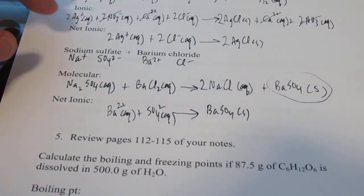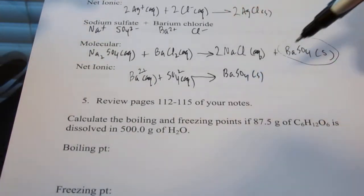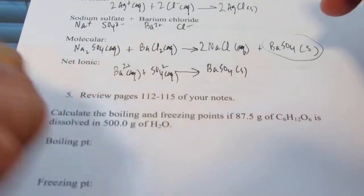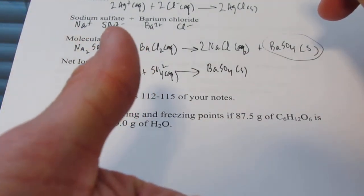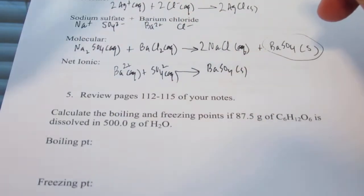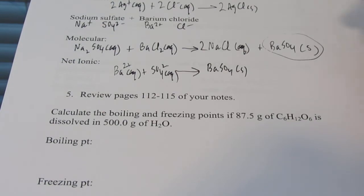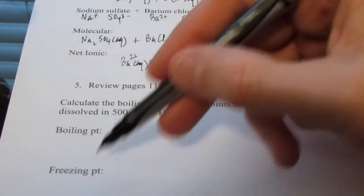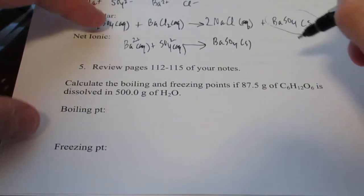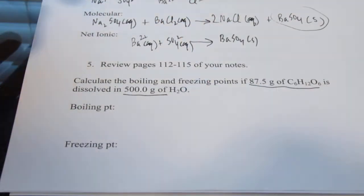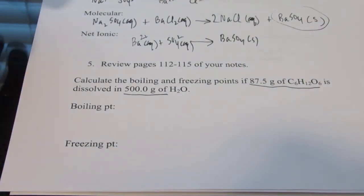Review pages 112 to 115 of your notes. That deals with colligative properties. Remember, colligative properties depend upon the number of particles, not the type, and there are four that we talked about: vapor pressure lowering, boiling point elevation, freezing point depression, and osmotic pressure. Take the time to go over those properties and learn them. We're going to do a boiling point elevation and freezing point depression problem.